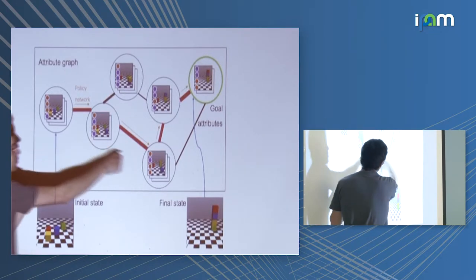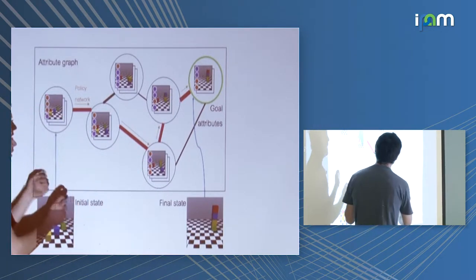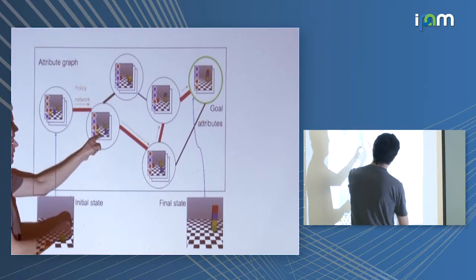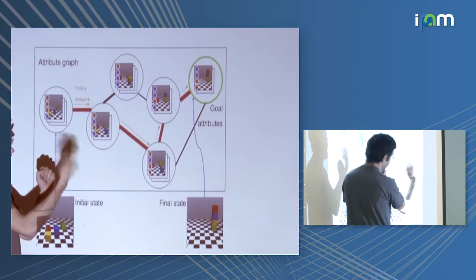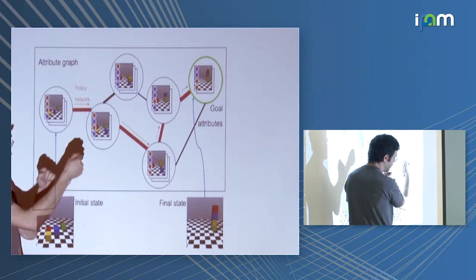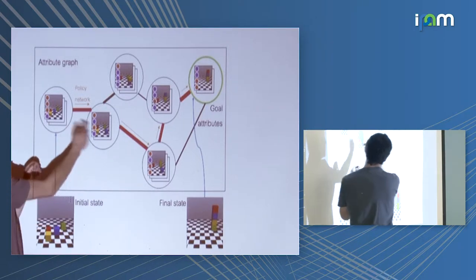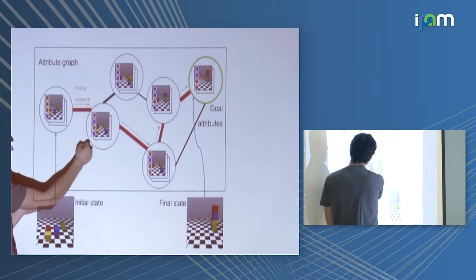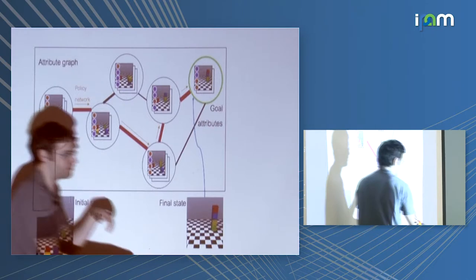At test time, the model determines the attributes of its initial state, does planning over the graph to find a path to the target attributes, identifies the first subgoal in that plan, and then uses a low-level policy to take a step toward that local goal.